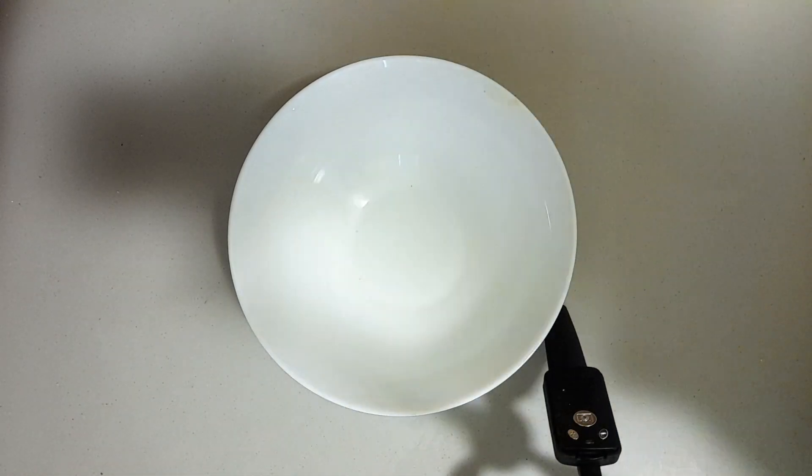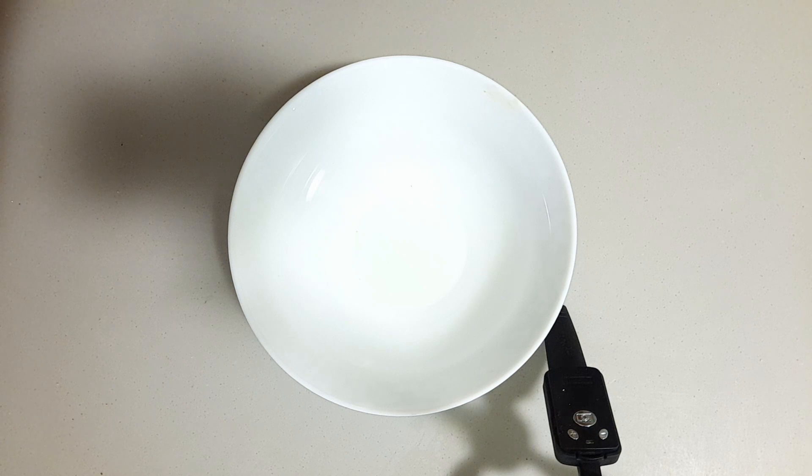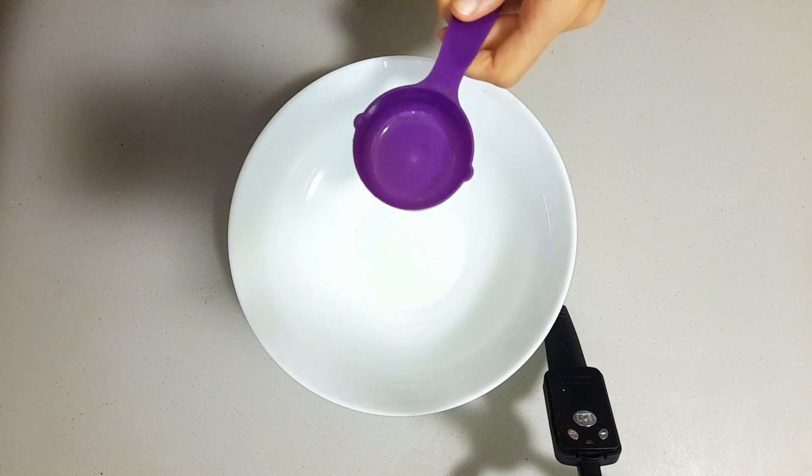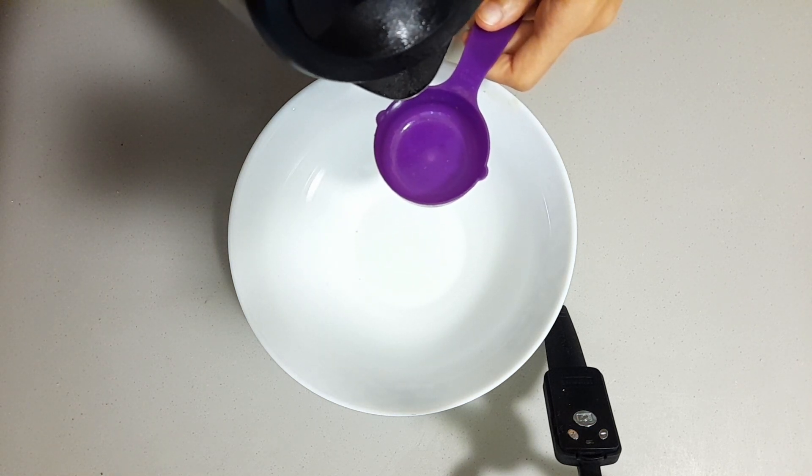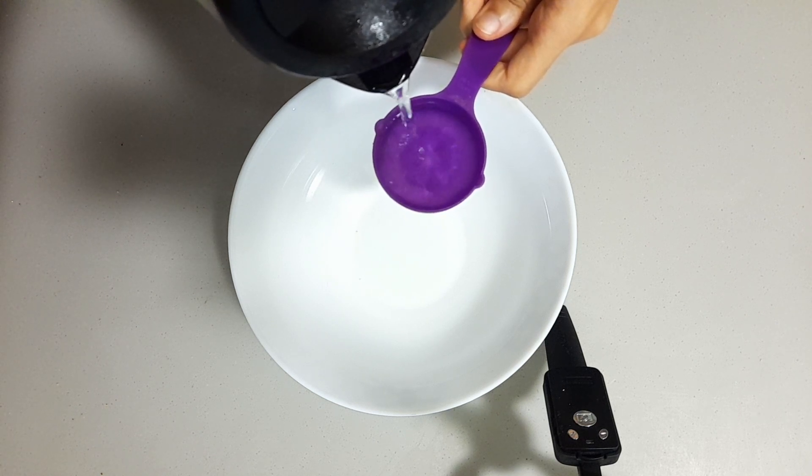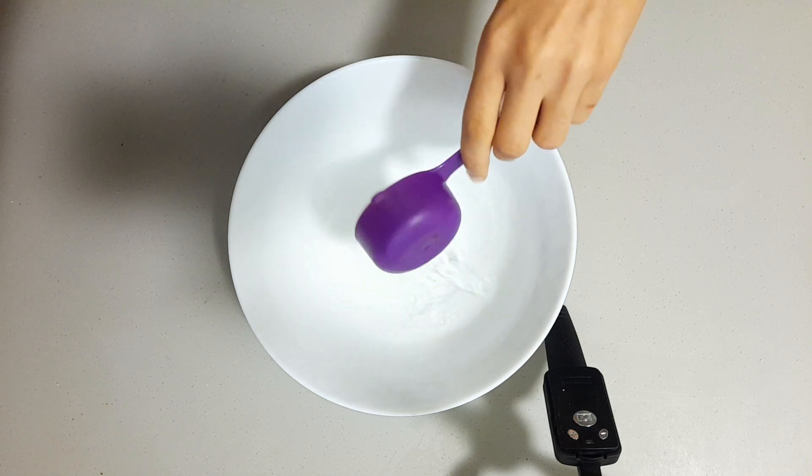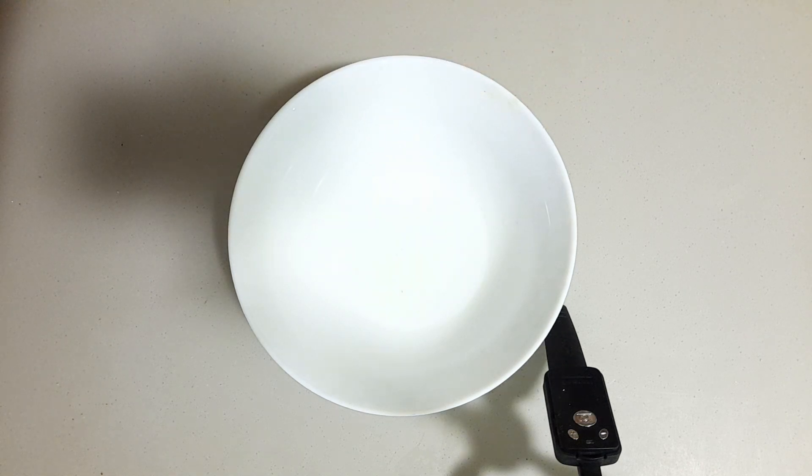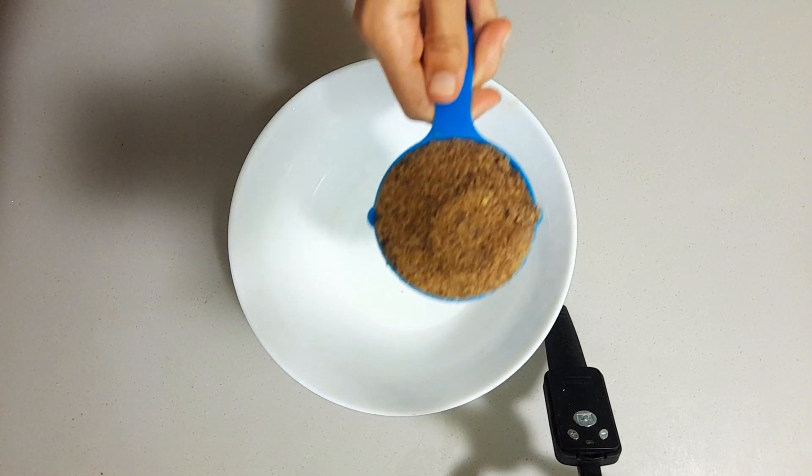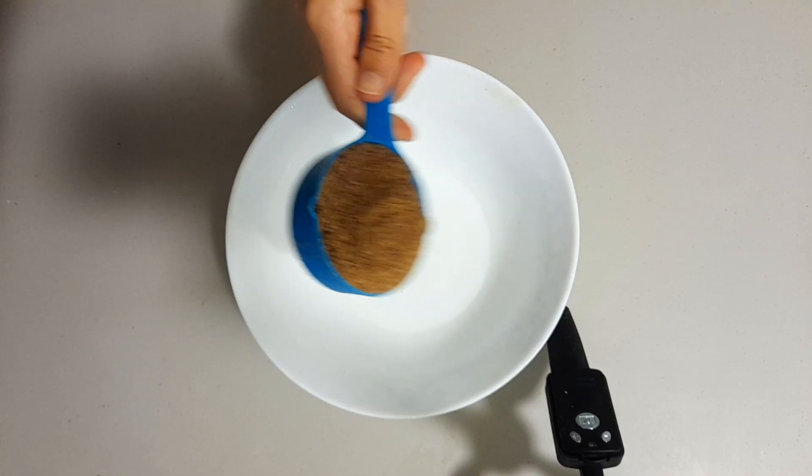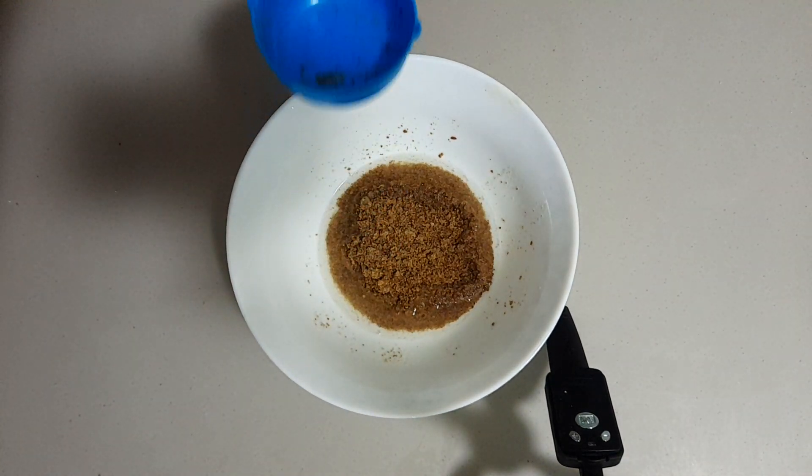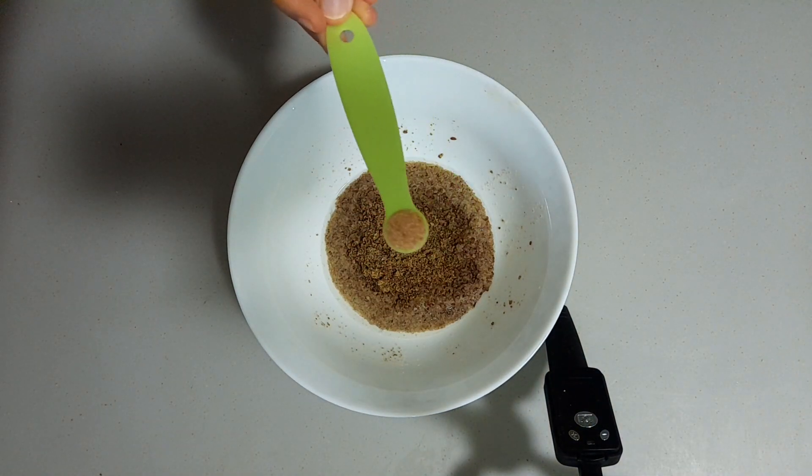The first version of this recipe is the bowl version. To a bowl you want to add a quarter cup of boiling water straight from the kettle. Then you want to immediately add the half cup of ground flaxseeds to the water. This is optional but you can also add a quarter teaspoon of salt for flavor.